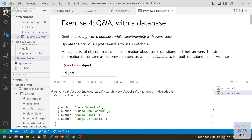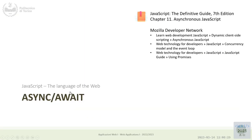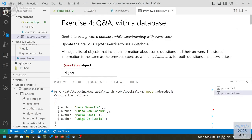`async/await` is a simplified syntax for promises — instead of `.then()` and `.catch()`, you write `await` to explicitly wait for the next result. The semantics are the same but the syntax is much simpler. That will be covered next week; for now let's work on the exercise.